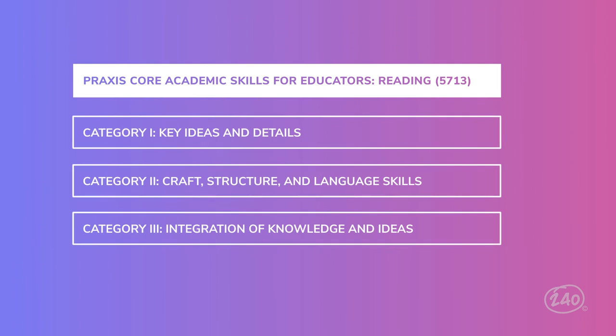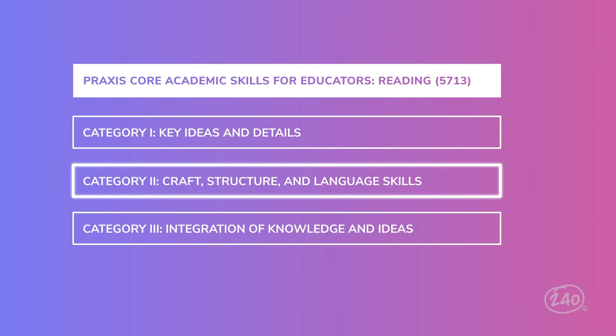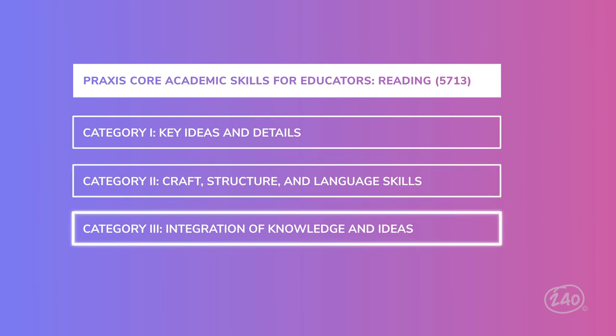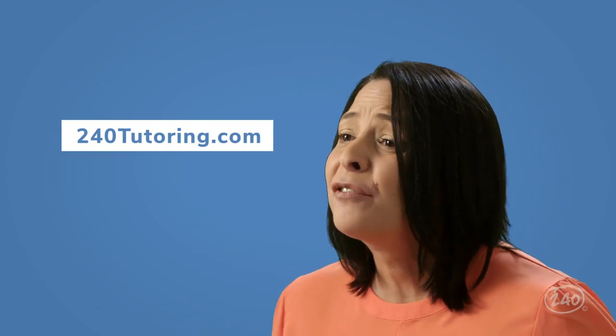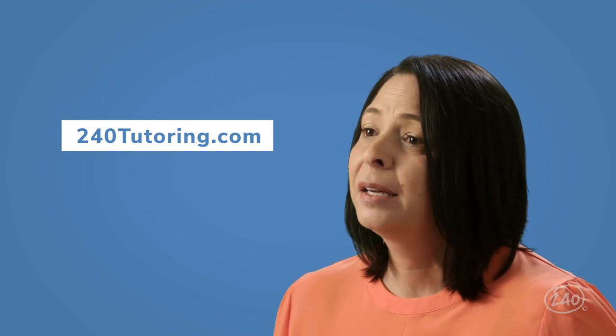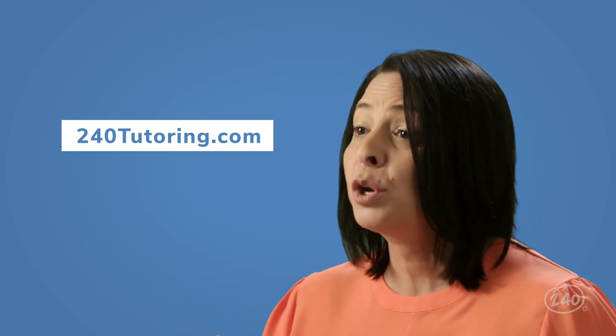The Praxis Core reading exam consists of 56 total questions that come from three overarching categories: key ideas and details, craft, structure, and language skills, and integration of knowledge and ideas. Each category has an outline of what to expect but they're still pretty overwhelming. Thankfully we've taken care of the research for you and we have everything you need in our study guide, but we'll go ahead and talk about some need-to-knows right now.